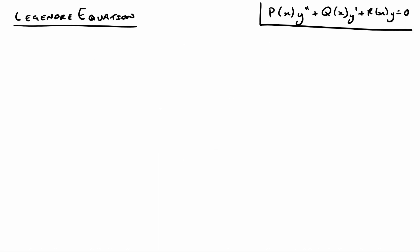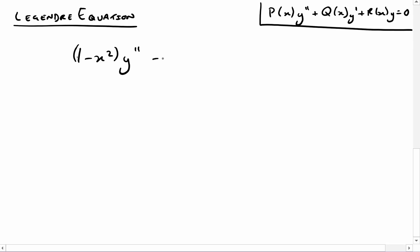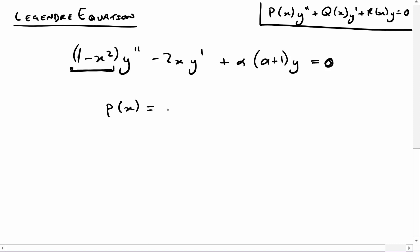The next equation is quite a famous one that comes up a lot in physics — the Legendre equation. It looks like this: (1 − x²) times the second derivative, minus 2x times the first derivative, plus α(α + 1) times y, equals zero — another homogeneous equation. Where's the singular point? We look at the first coefficient: p(x) = 1 − x². We want to see where that equals zero, and rearranging, we get a singular point at x = ±1.